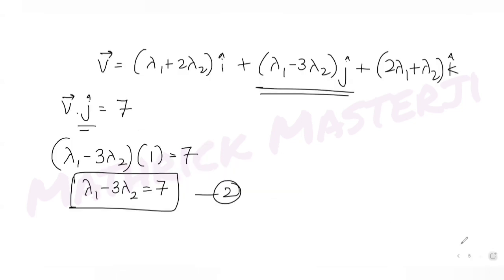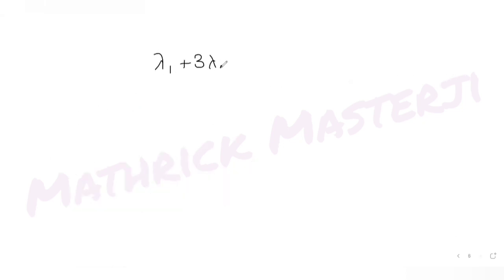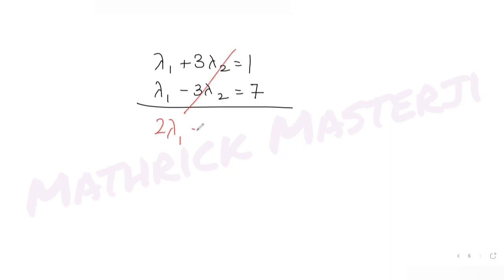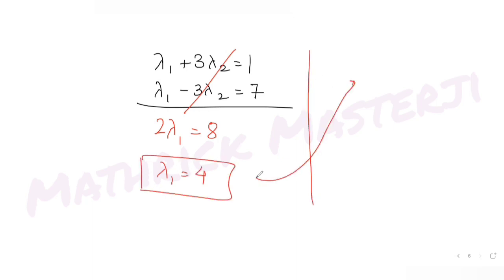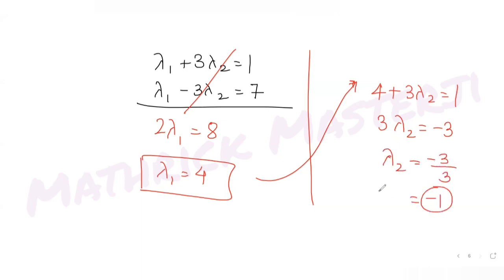Adding Equation 1 (λ₁ + 3λ₂ = 1) and Equation 2 (λ₁ - 3λ₂ = 7): the λ₂ terms cancel, giving 2λ₁ = 8, so λ₁ = 4. Substituting back: 4 + 3λ₂ = 1, so λ₂ = -1.